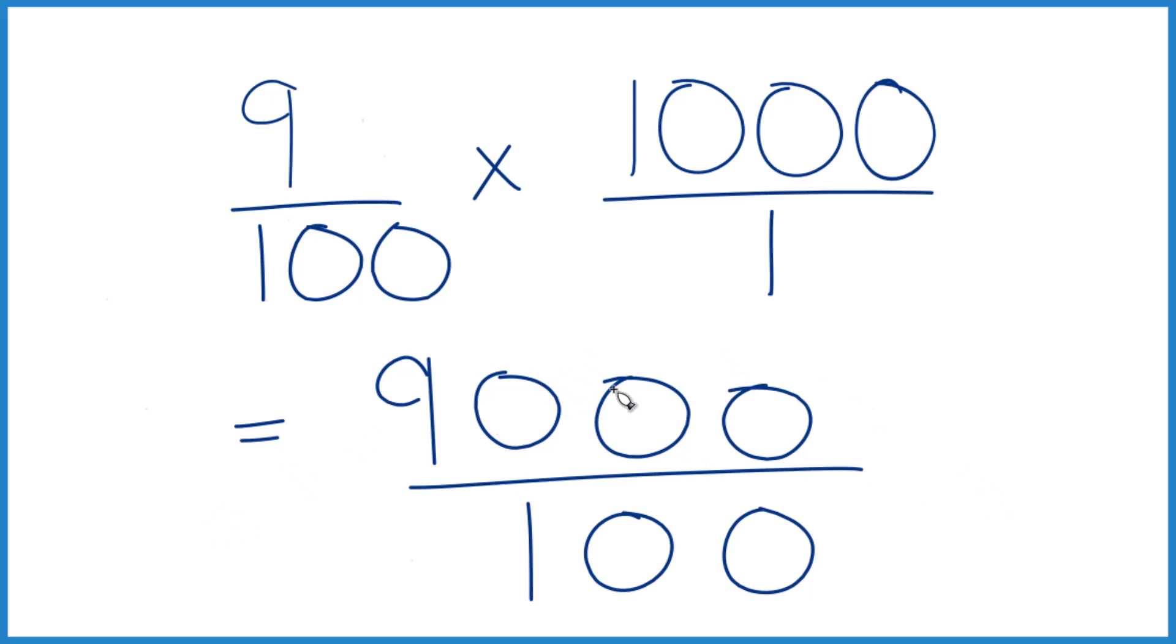So when we divide 9,000 by 100, we get 90. 9% of 1,000 is 90.